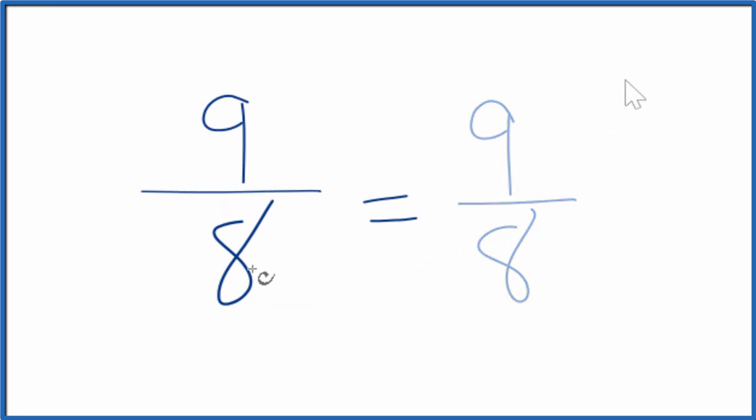Let's do that. 8 goes into 9 one time. 1 times 8, that's 8. Then we have 1 left over. Just bring the denominator across.